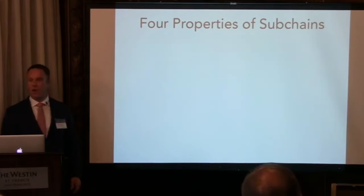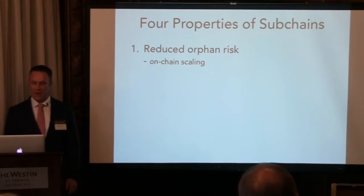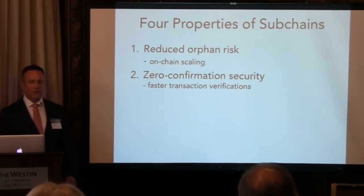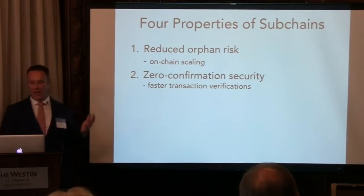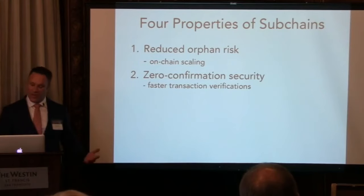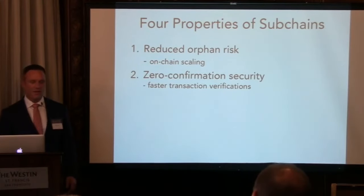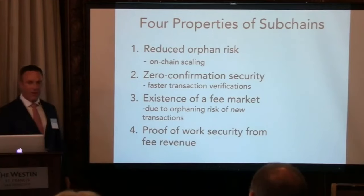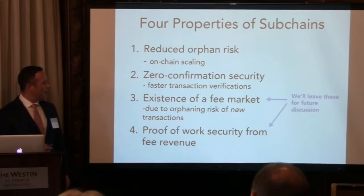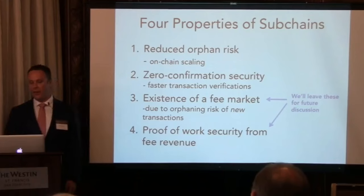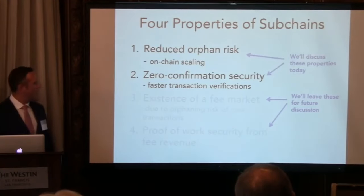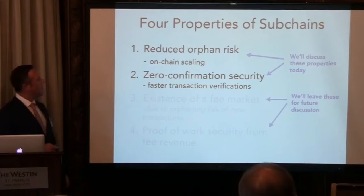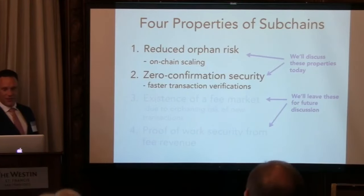There are four important properties of subchains. The first is that subchains reduce orphan risk to facilitate more on-chain scaling. Second, subchains provide zero-confirmation security and faster transaction verification times. There are also two other interesting properties, but we'll leave those for a future discussion. There's a paper called subchains.pdf on the Bitcoin website that describes those two properties in more detail. For the remainder of this talk, we'll look more carefully at these first two properties.